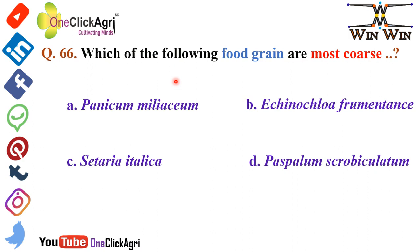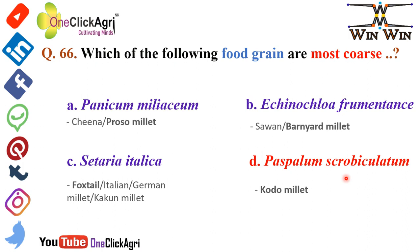Question 66: Which of the following food grains is the most coarse? The right answer is Paspalum scrobiculatum, also known as Kodo millet. The other options: Panicum miliaceum is known as Chena or proso millet; Echinochloa frumentacea is known as Sawan or barnyard millet; Setaria italica is also known as foxtail millet, Italian millet, German millet, or Kangni millet. Please remember these.